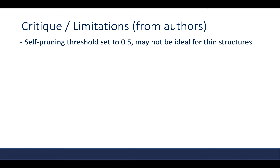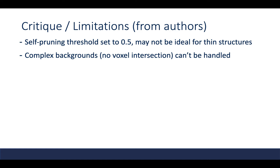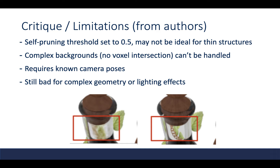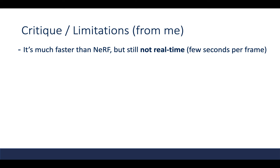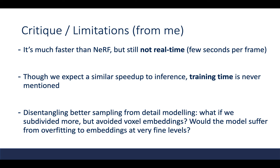That brings us to some critiques and limitations. As the authors say, the self-pruning threshold is a bit arbitrary and may not be ideal for thin structures. It requires known camera poses and is still not great for more complicated effects — for example, refraction is not captured very well. One thing they may have done better is to disentangle the effects of sampling from detail modeling; it would have been interesting to see the gains of subdividing more than three or four times, and whether there's beneficial implicit regularization for using larger voxels on their embeddings.